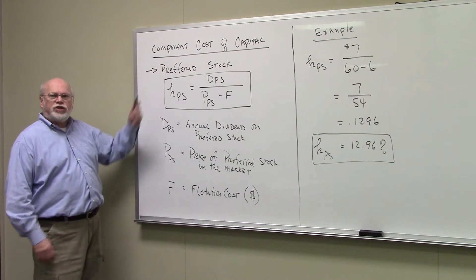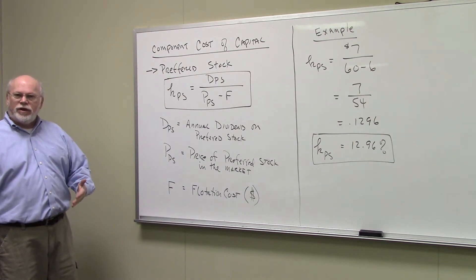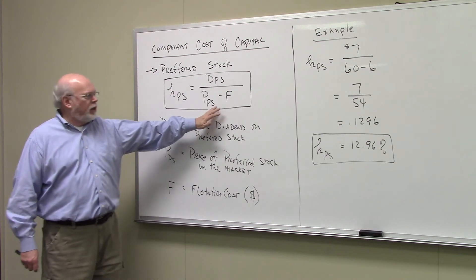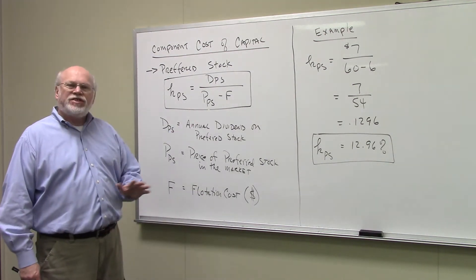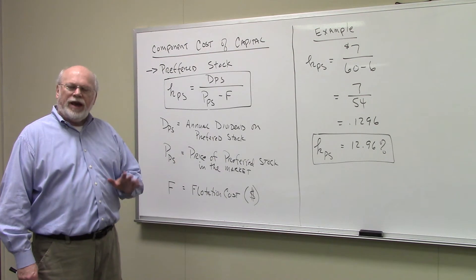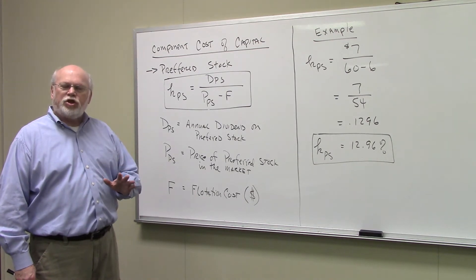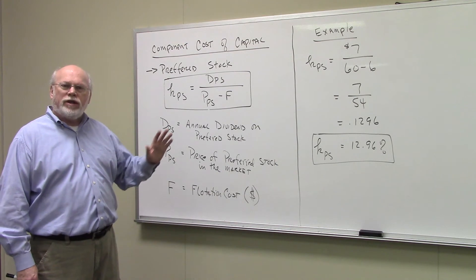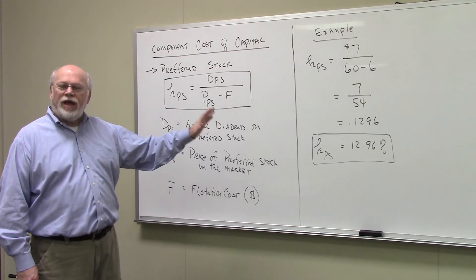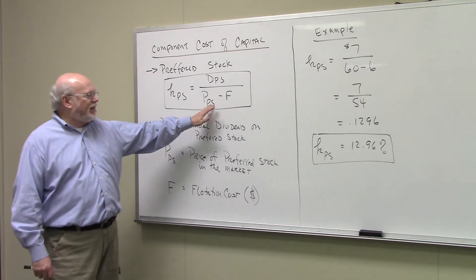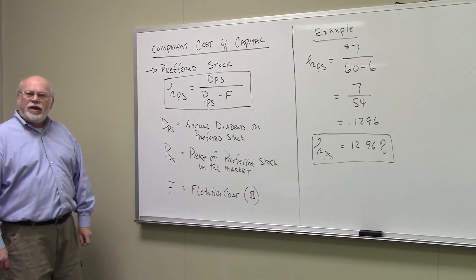The cost of capital for preferred stock is the dividend on the preferred stock — the annual dividend — divided by the price of the preferred stock in the market minus any flotation cost. What we have in the denominator is the net price of the preferred. The flotation cost F is expressed as a dollar amount, so the net price equals market price minus the dollar flotation cost. The numerator is the annual dividend that the preferred stock pays.